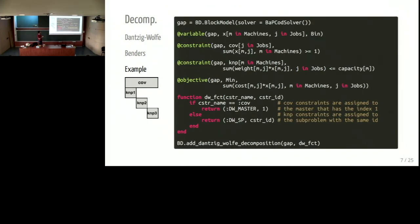So the model becomes a block model. We keep the JuMP model and we add the annotation function. The covering constraints are assigned to the master, and the knapsack constraints of machine m go in the corresponding subproblem. We have one knapsack constraint for each machine, and then we assign the annotation function.